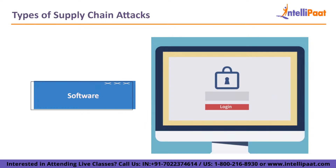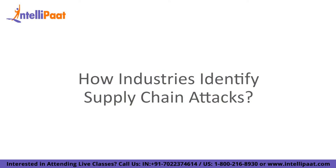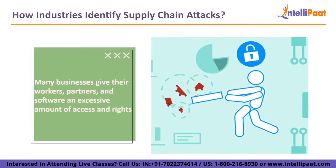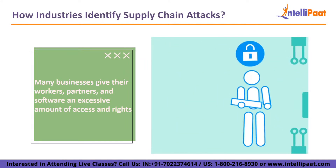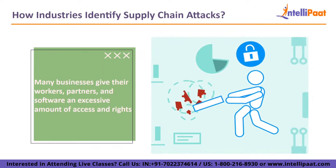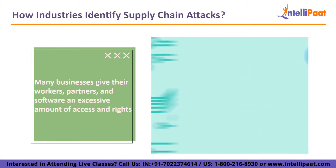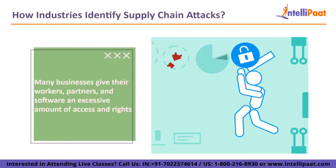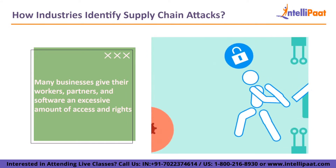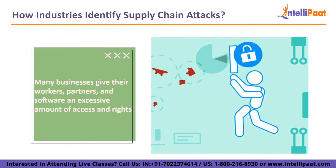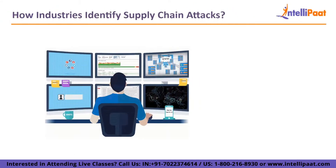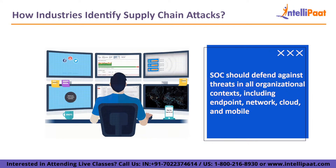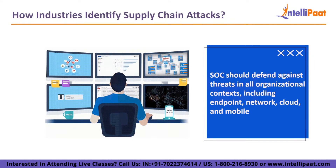Now let's move on to our next topic: How Industries Identify Supply Chain Attacks. Rapid supply chain threat detection is essential for preventing irreparable damage. You may identify supply chain assaults involving everything from firmware to software by using contemporary tools. Many businesses give their workers, partners, and software an excessive amount of access and rights, which makes supply chain attacks simpler. Implementing least privilege — providing each person and piece of software only the permission necessary to carry out their tasks — is critical. Partner companies and third-party applications do not require unrestricted access to every portion of the network. Network segmentation can be used to divide the network into areas according to business needs.